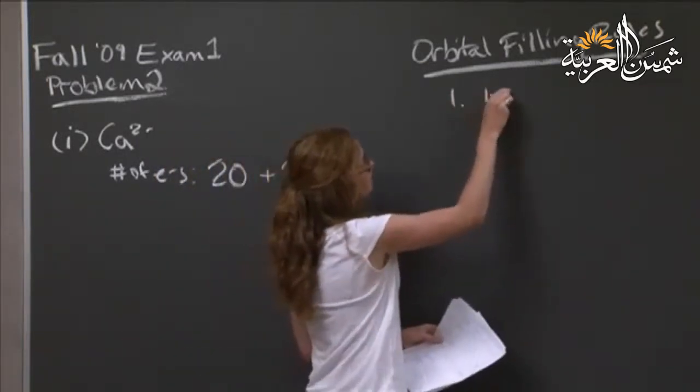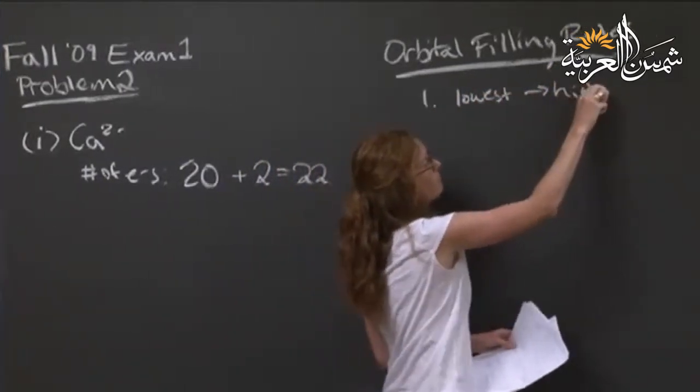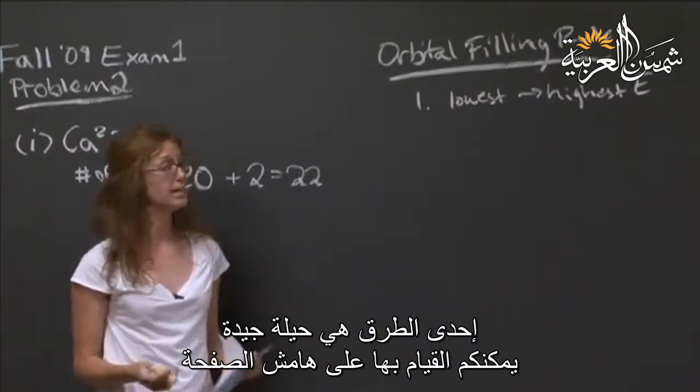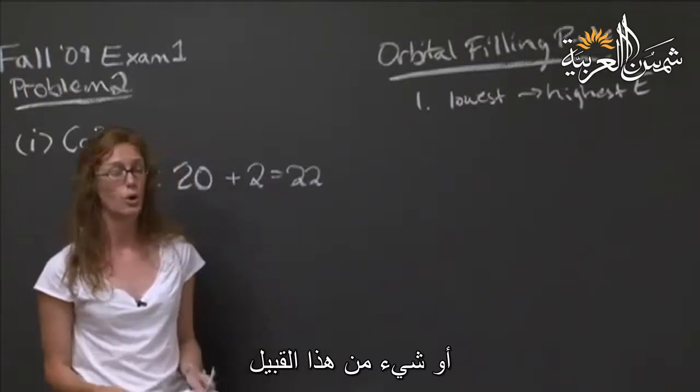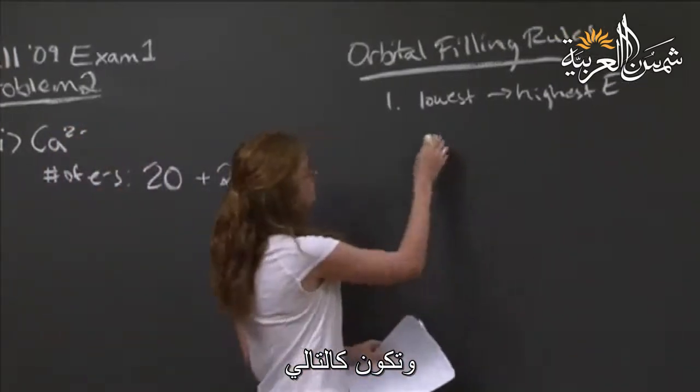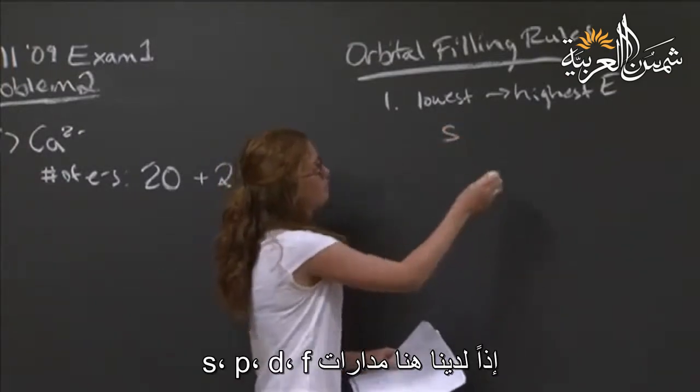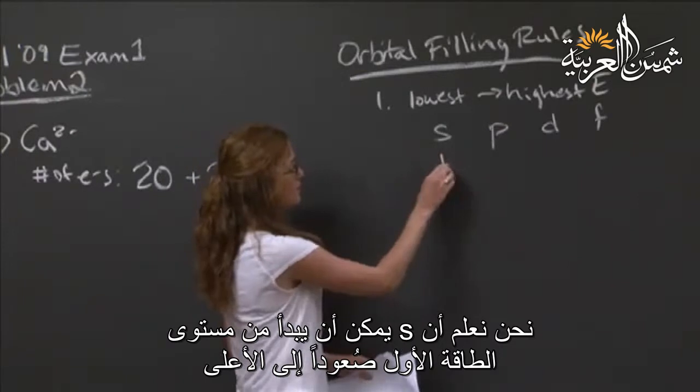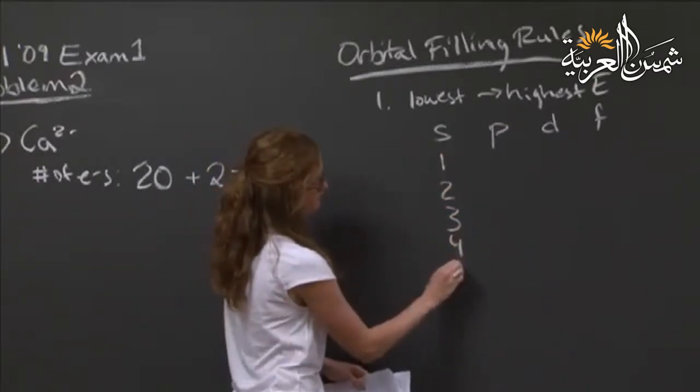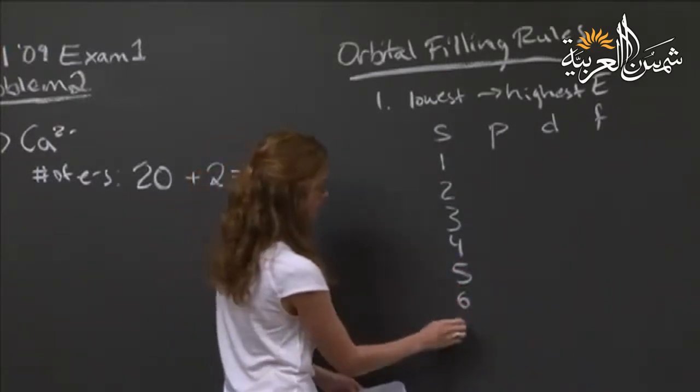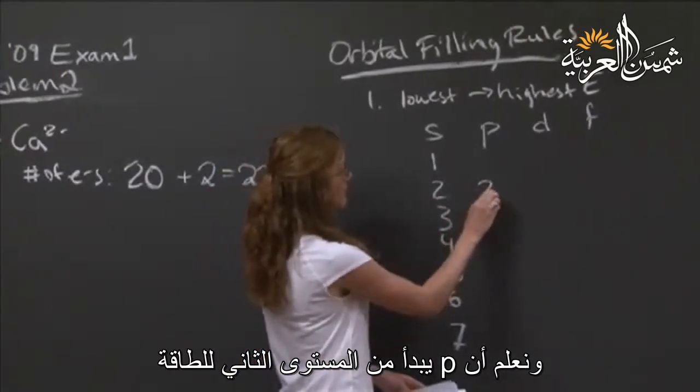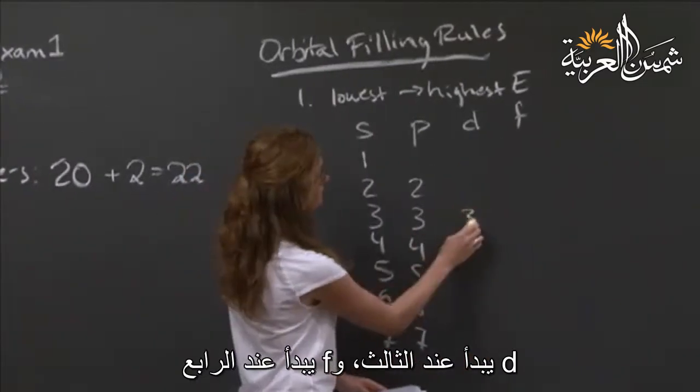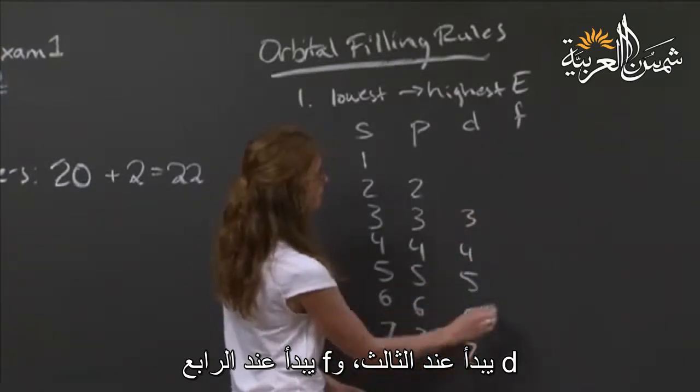Now, how do we figure that out? Well, there's a few ways. One way is a nice trick that you can do on the side of your page. We have our S, P, D, and F orbitals. We know that S can be in the first energy level up. We know that P starts at the second energy level, D starts at the third, and F starts at the fourth.